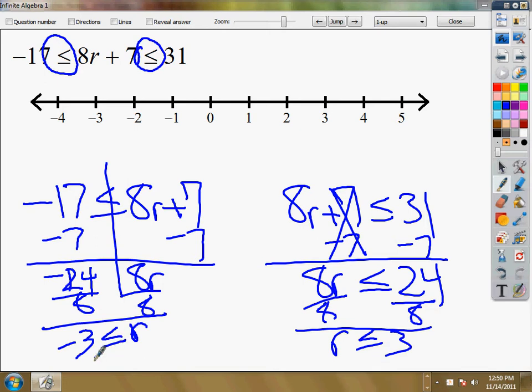So at my negative 3 I'm going to go up and make a circle. I'm going to fill it in because it's greater than or equal to and it goes this way. At my positive 3, I'm going to make a circle, fill it in because it's less than or equal to. And then I'm just going to connect the two parts together. That's all you have to do on that one.